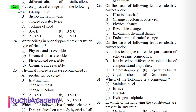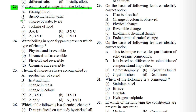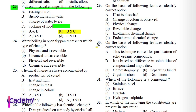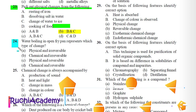Question 23: Pick out physical changes from the following: A) Rusting of iron, B) Dissolving salt in water, C) Change of water to ice, D) Cooking of food. Correct answer: B and C — dissolving salt in water and change of water to ice are physical changes.